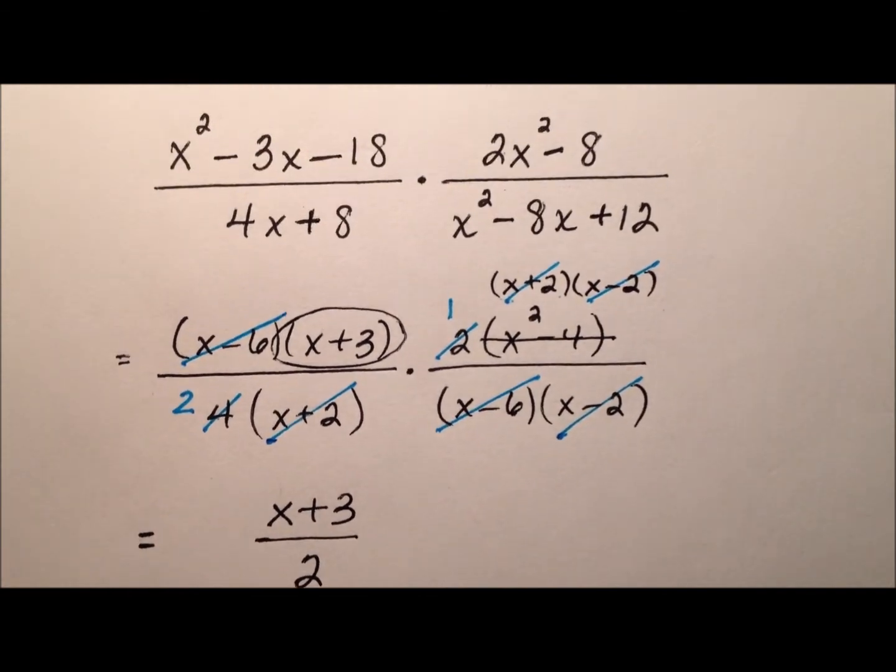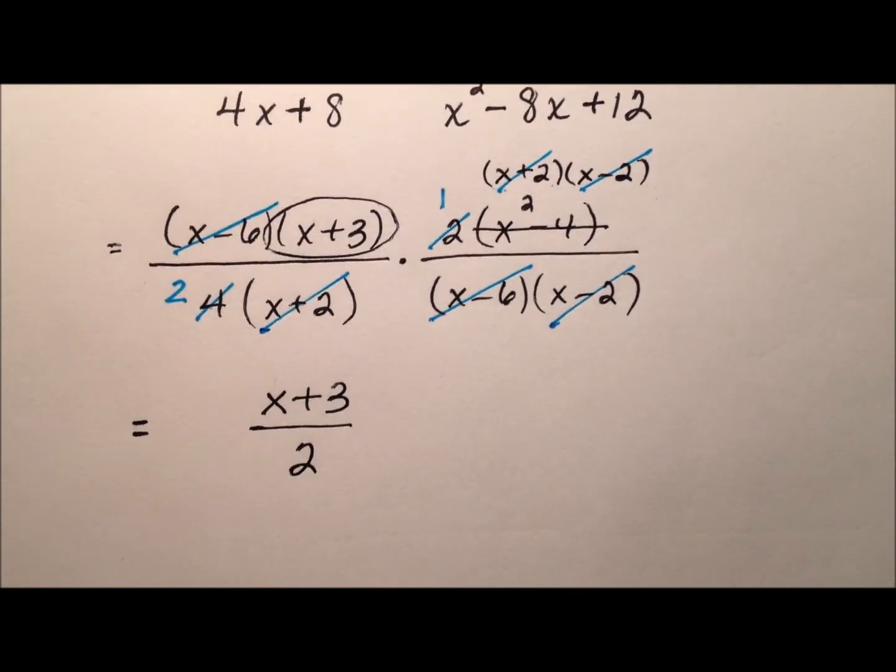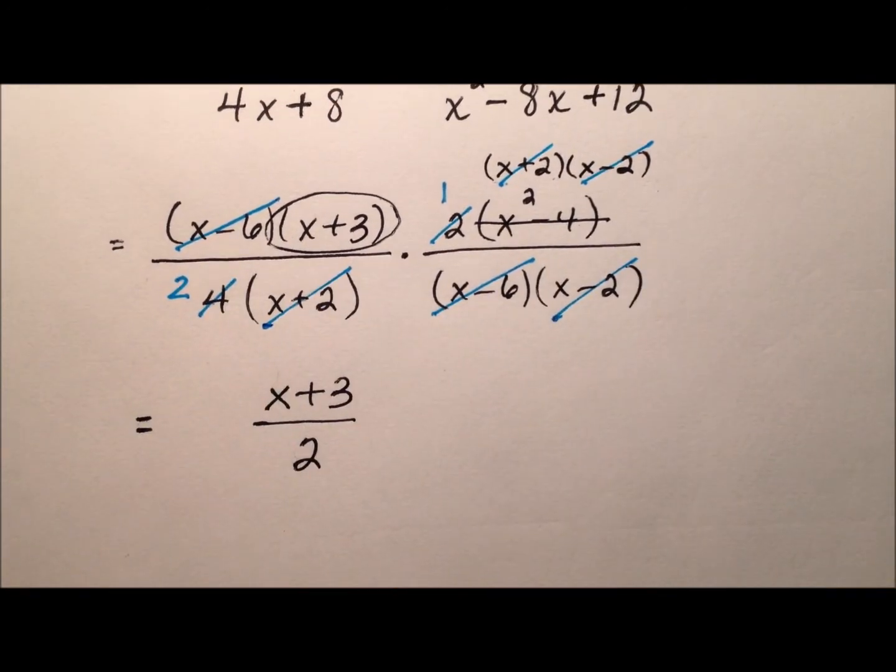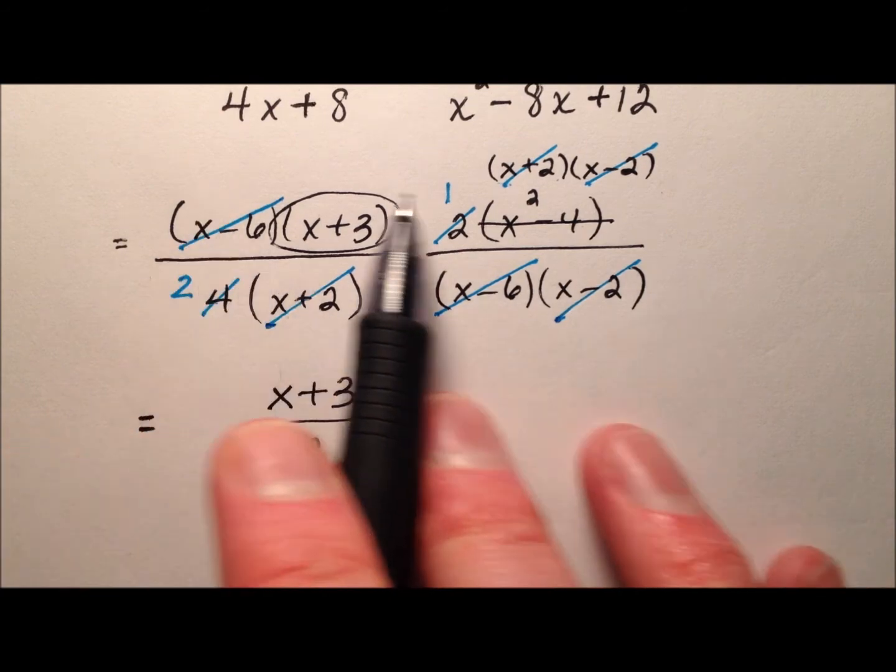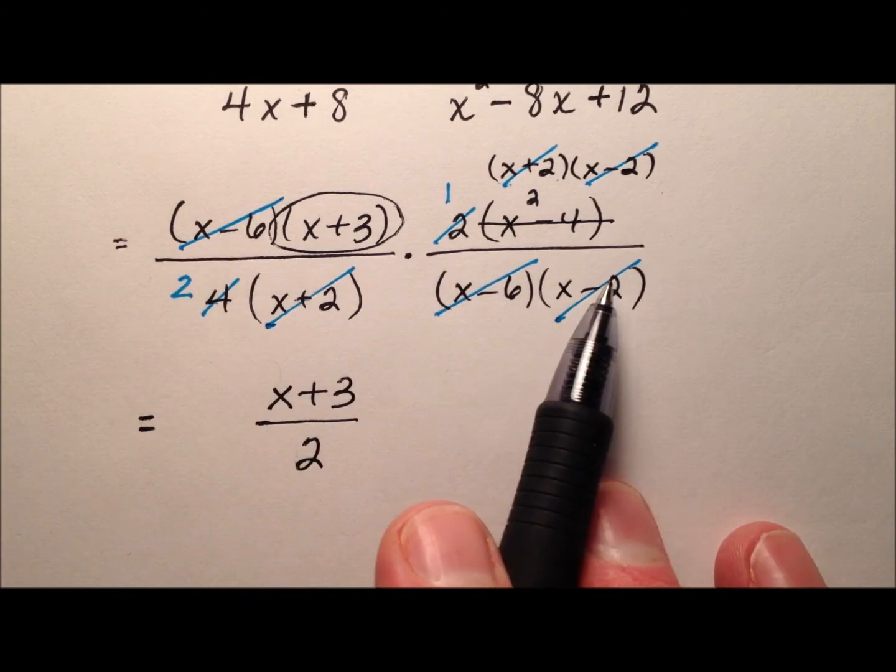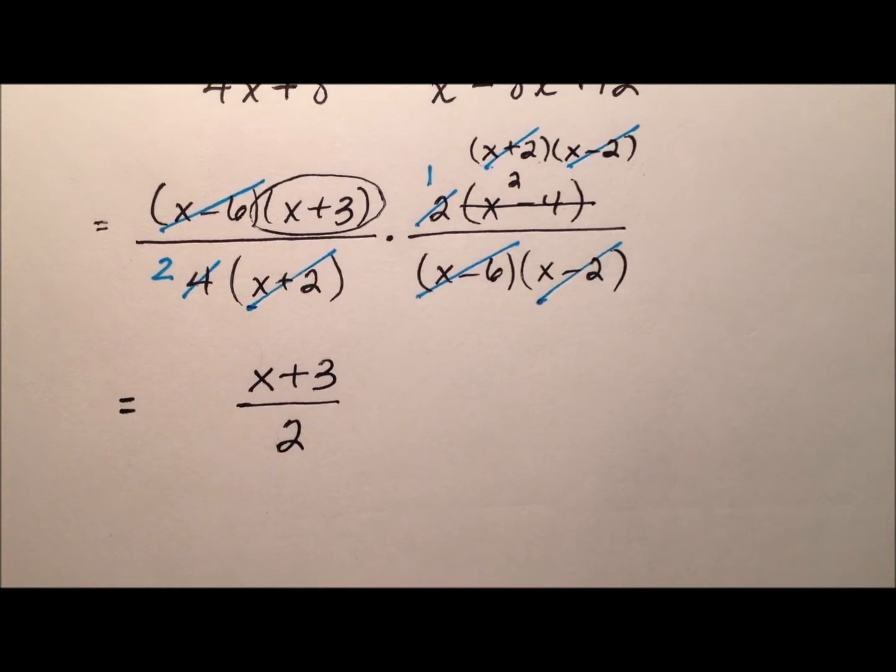When I multiplied these two, I did so by factoring everything first, canceling any common factors, and then multiplying straight across. But essentially there wasn't any multiplying straight across to be done because there was only a single factor left in the top and the bottom respectively.